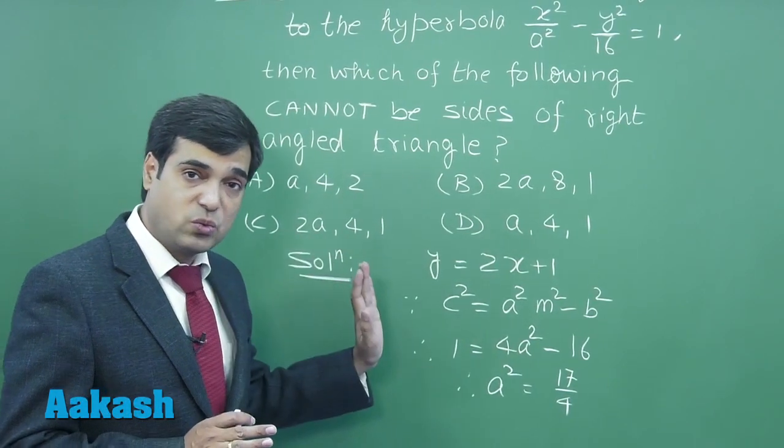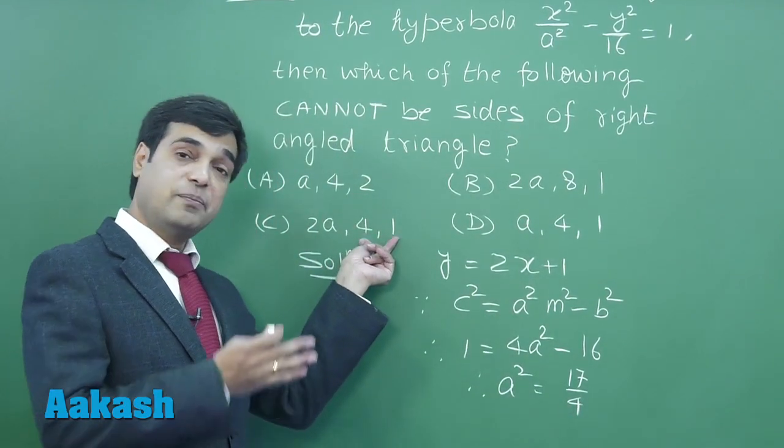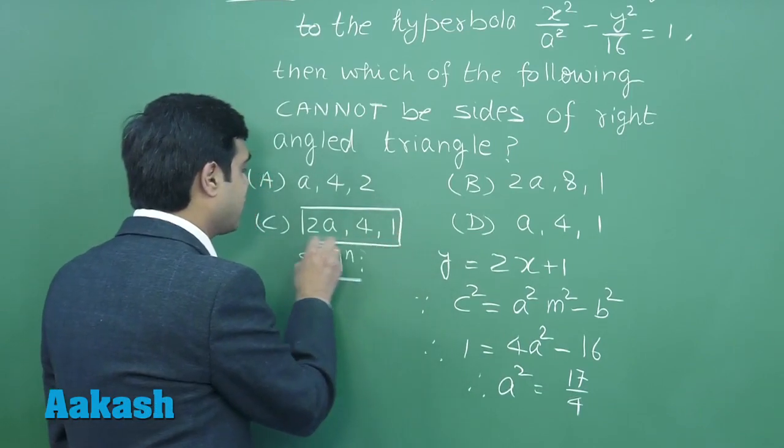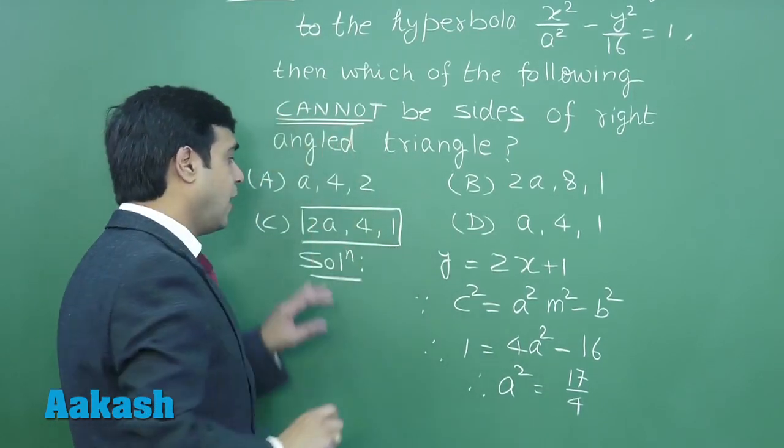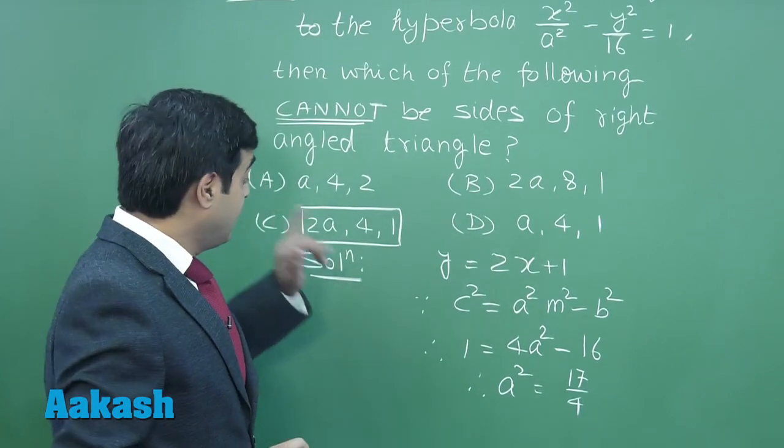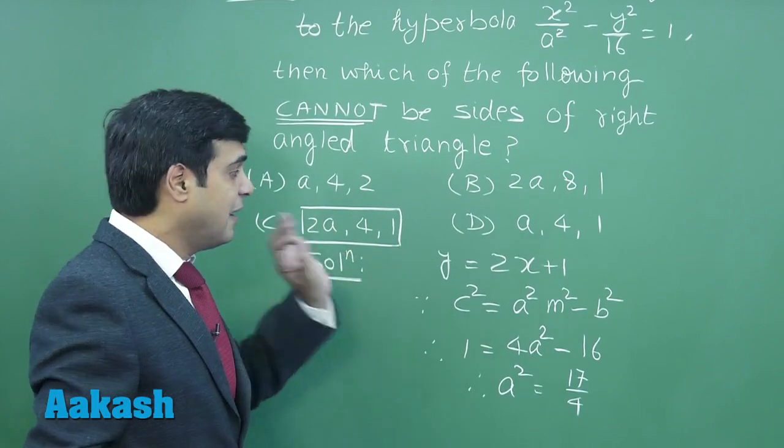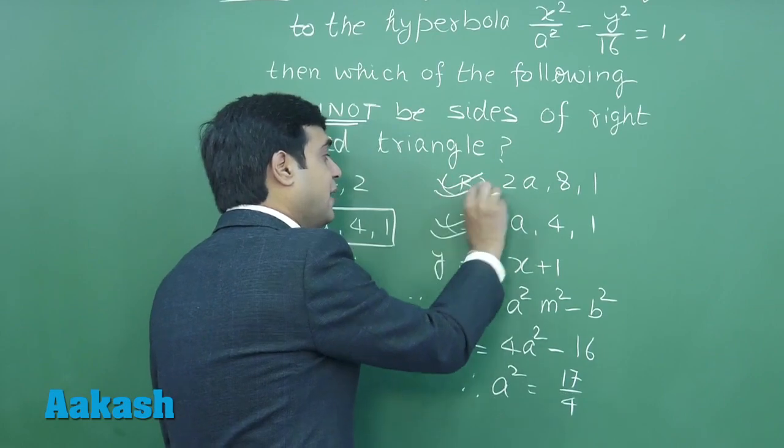The sum of these two squares is also 17, which means this is following a right angle triangle. The question is asking about 'cannot be', so this is not the correct answer. Since 2a, 4, 1 is forming right angle triangle, clearly a, 4, 1 is not forming; 2a, 8, 1 is not forming.